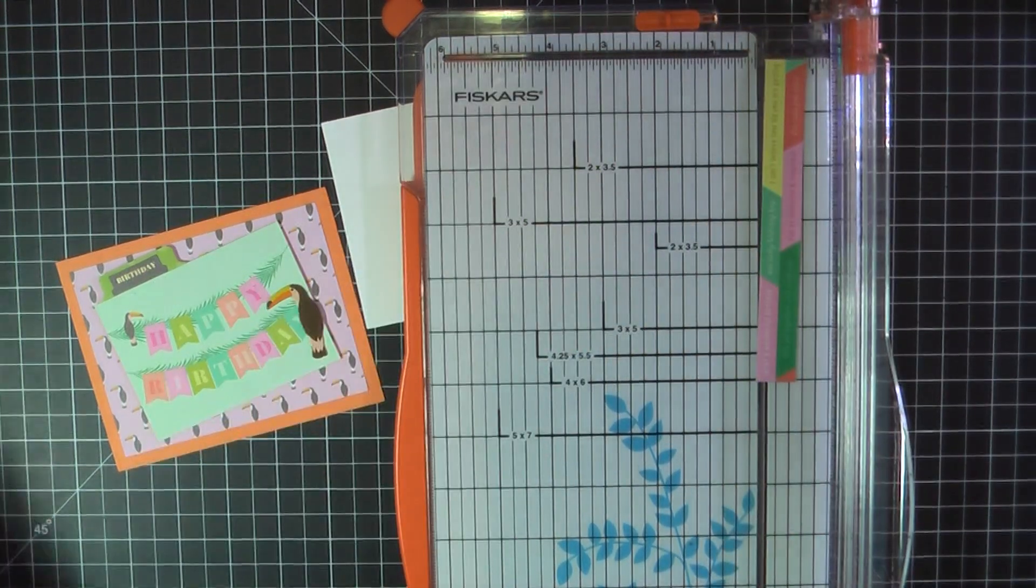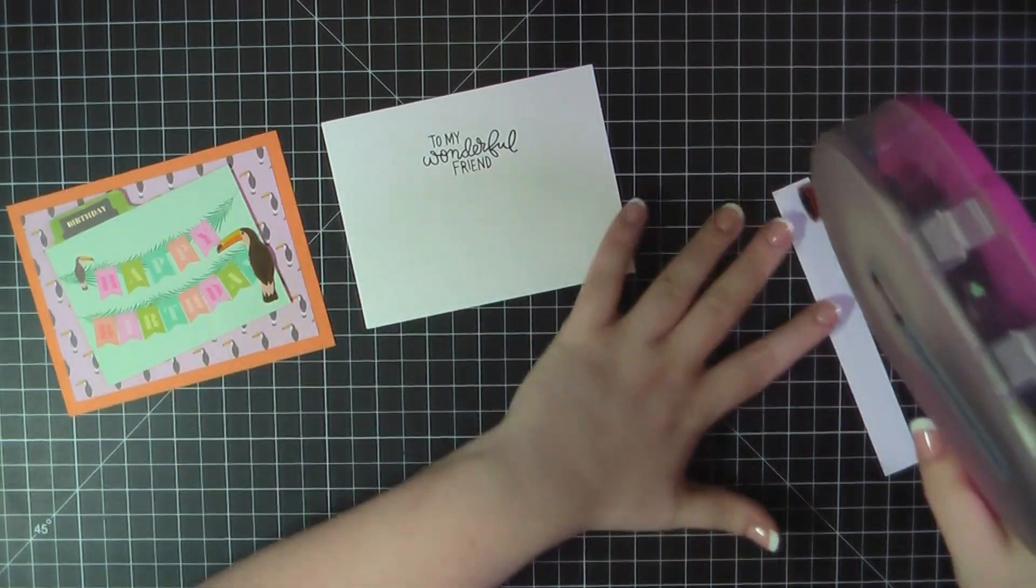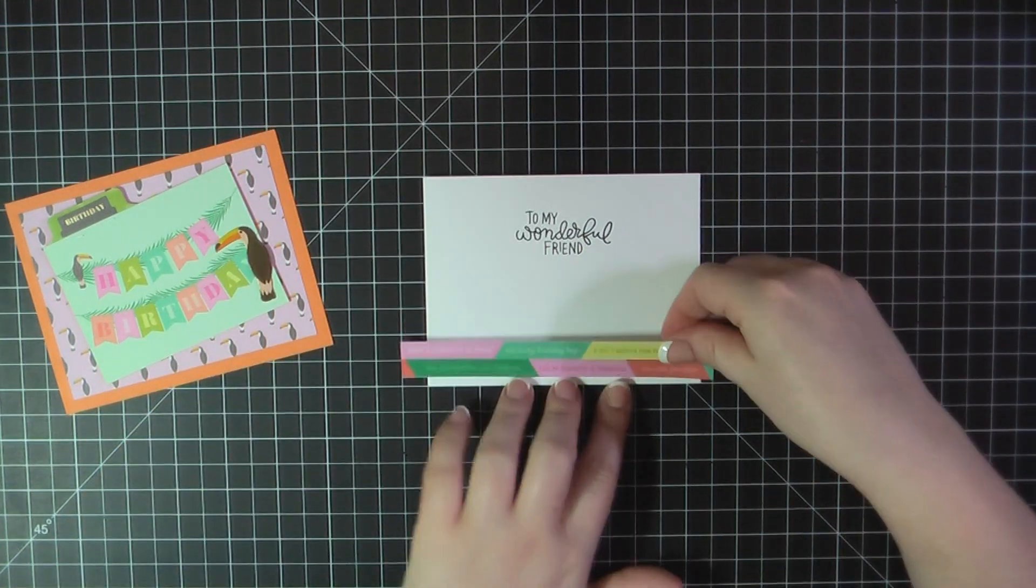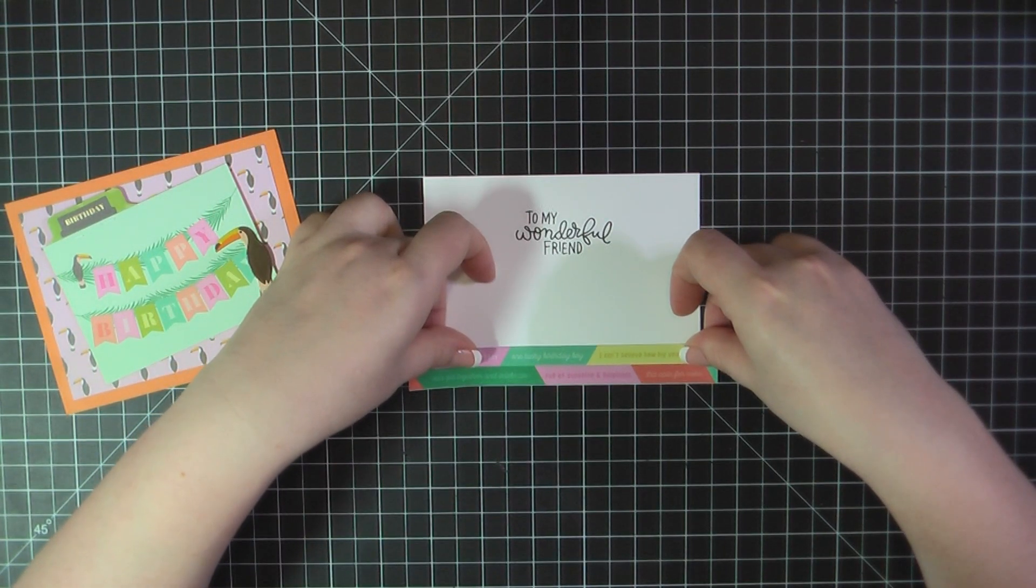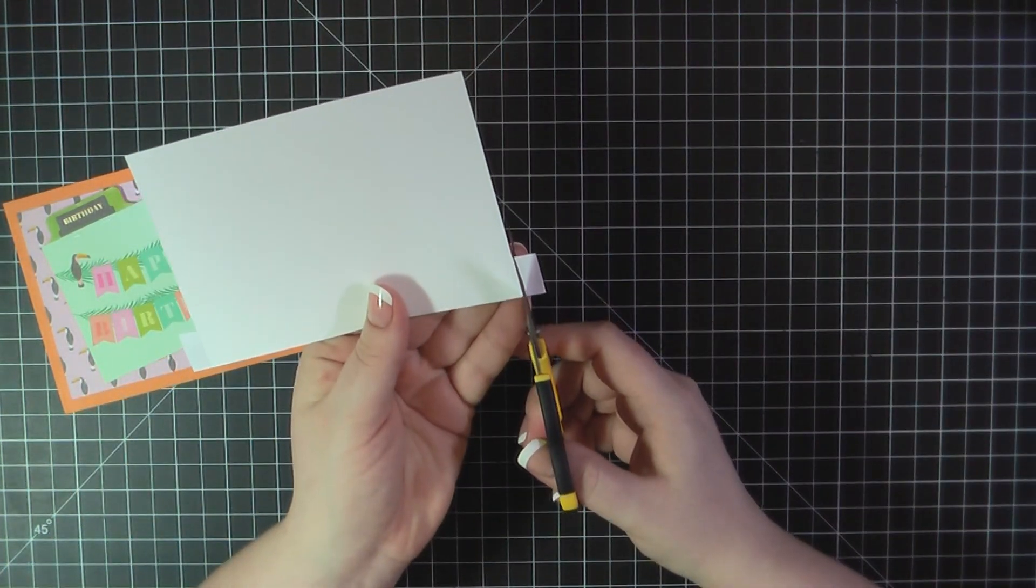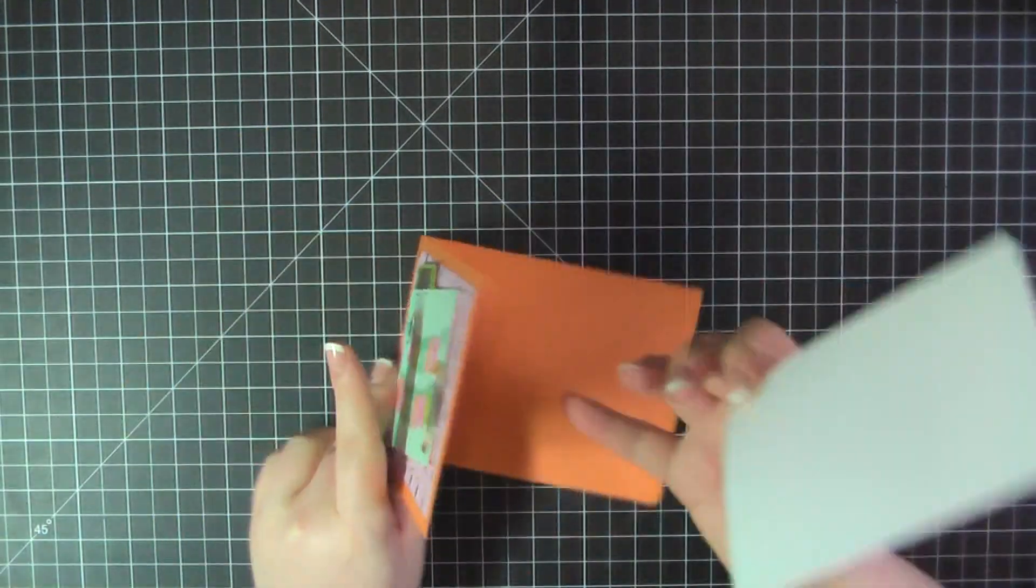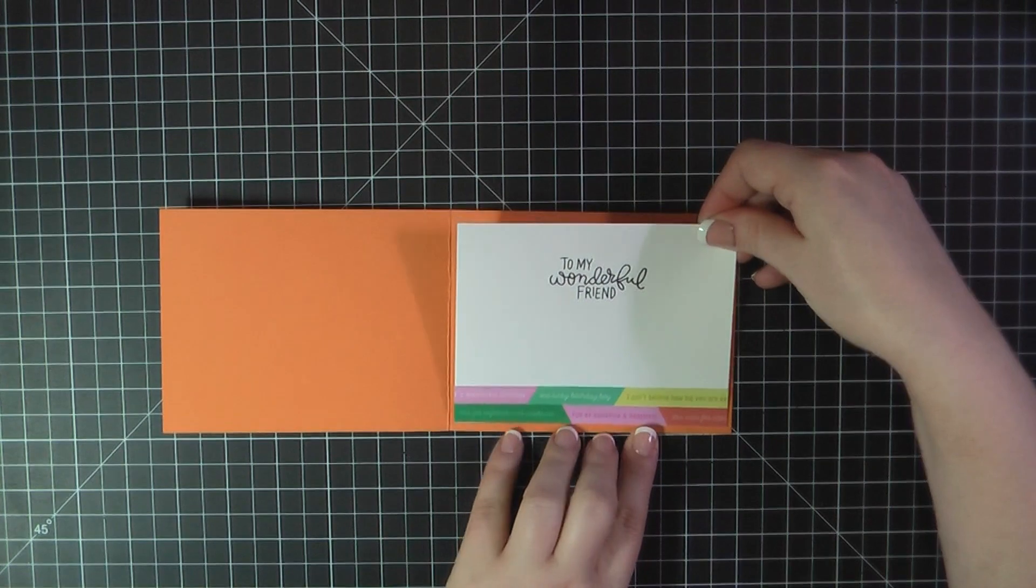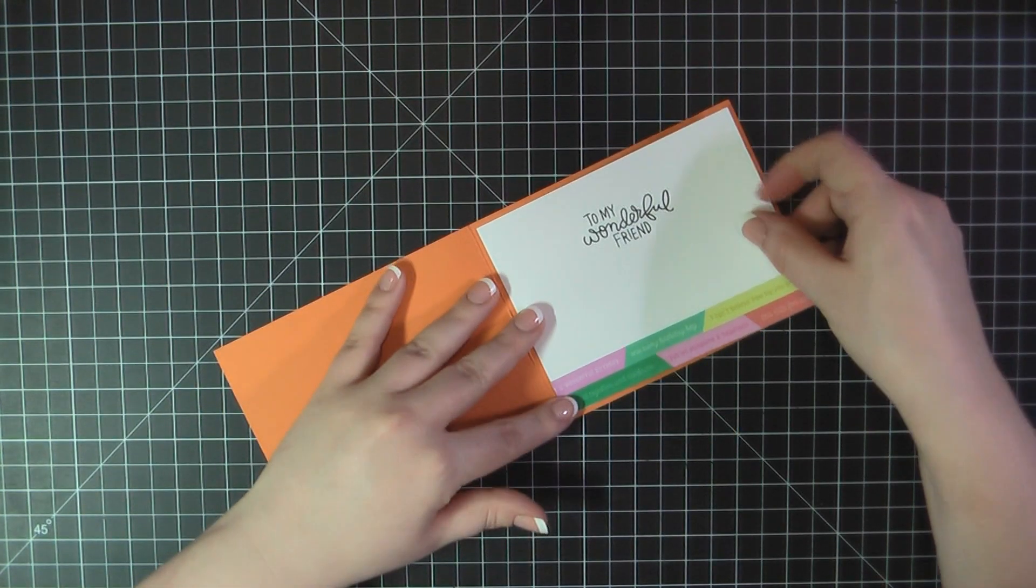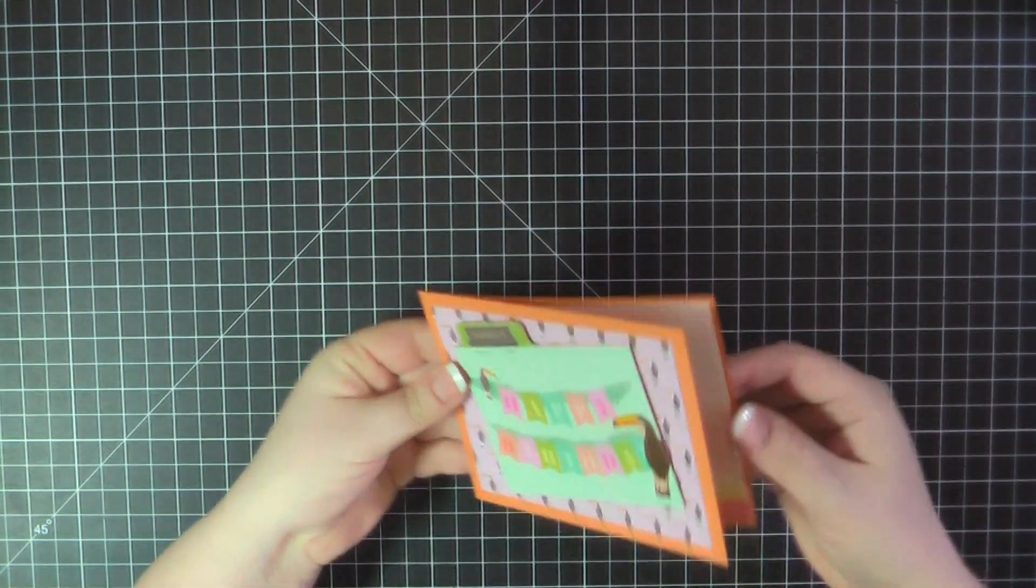I've grabbed a scrap piece of pattern paper here and just trimmed off two lines of these sentiments. I'm going to add some ATG to the back of that, and then I'll place that along the bottom of my panel. I'll go ahead then and trim off my excess, add some ATG to the back, and then I'll place that on the inside of my card base. And that will complete card number one.